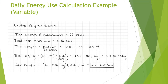Here is an example calculation of daily energy use for a variable power source. One difference between this and the constant power source is I had to measure the time duration of the measurement in order to find the instantaneous power supplied over that period of time, which was found to be 6.4 watts. Using the same conversion as the constant power source example, the total kWh per month was found to be 2.